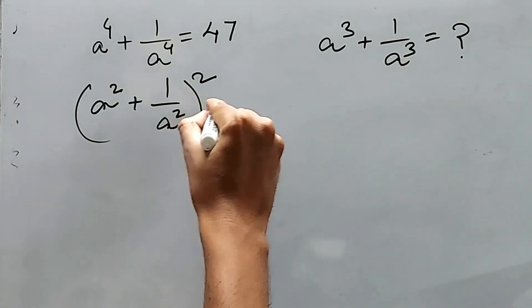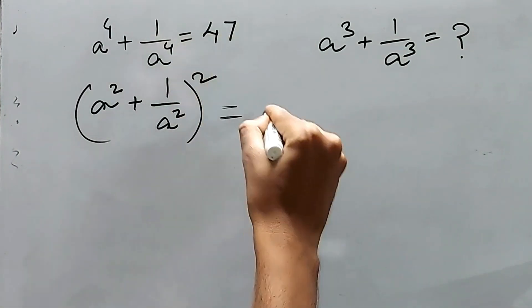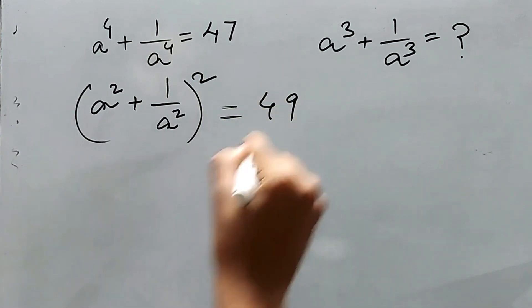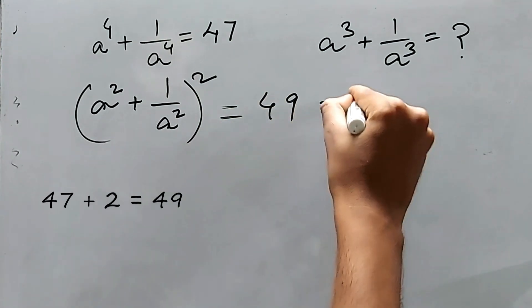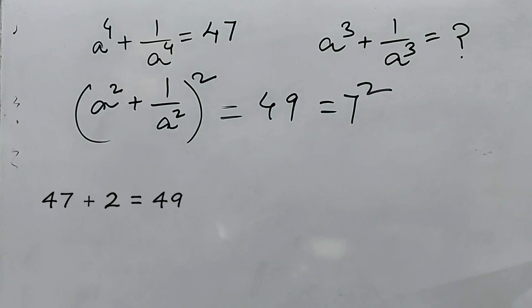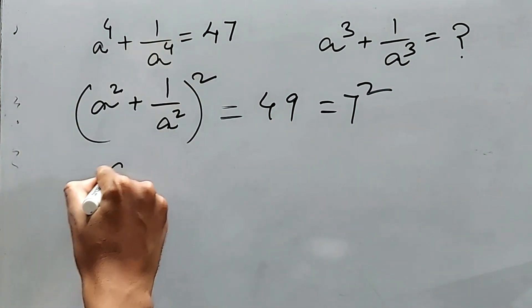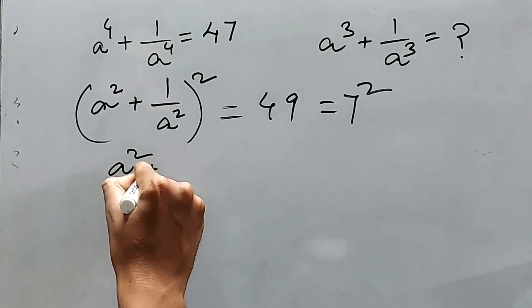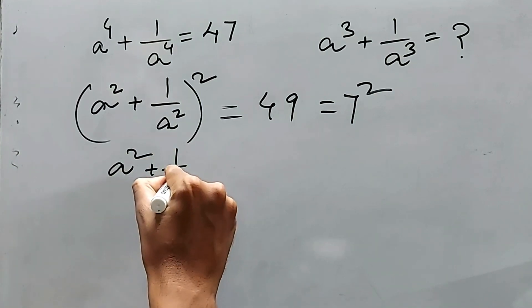So plus 2 means 49. Now 49 is 7^2. If we take the square root, a^2 + 1/a^2 = 7.